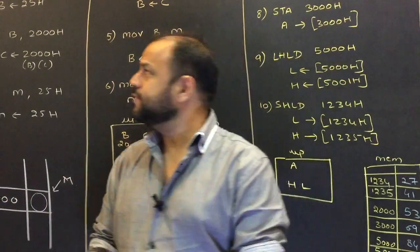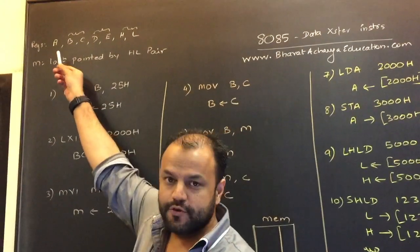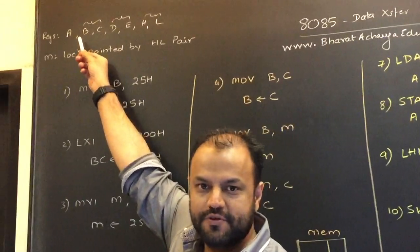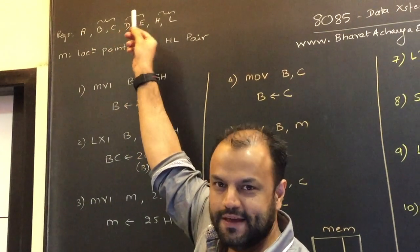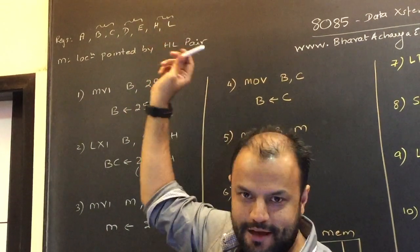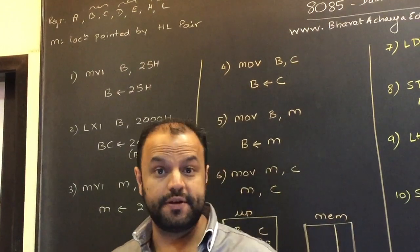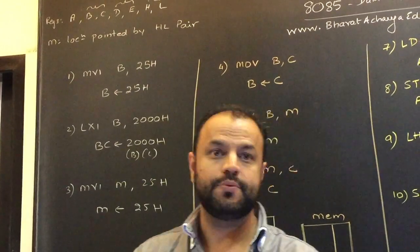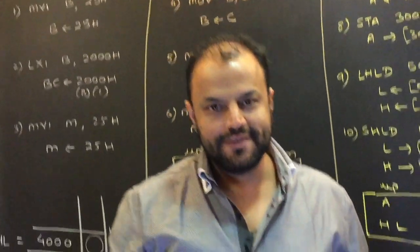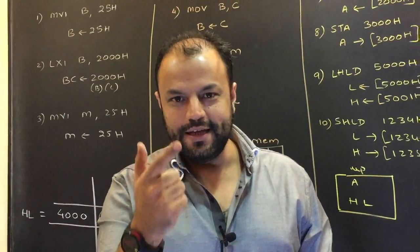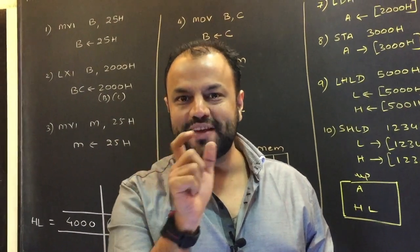I'm sure you know about the registers of 8085. 8085 has got seven general purpose registers: A, B, C, D, E, H, L. I'm sure you've seen the architecture. You've seen addressing modes. Those are required to understand this video. Now, out of those seven registers, B, C, D, E, and H, L can be used as pairs.